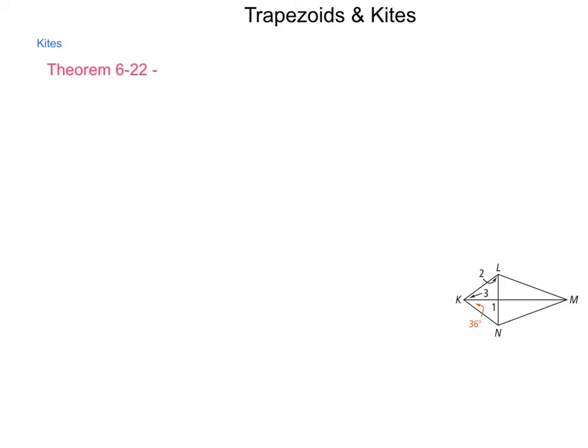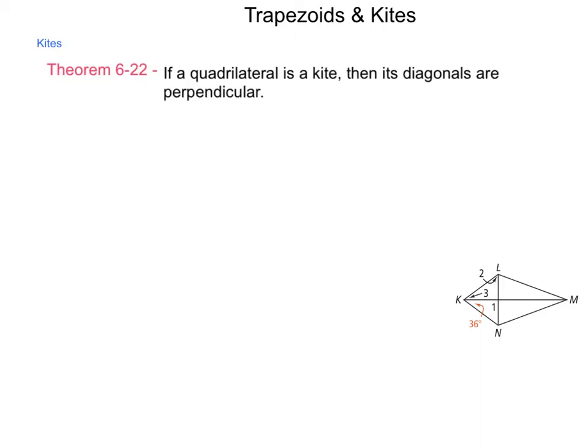Theorem 622 talks about kites, specifically about the diagonals. It states if a quadrilateral is a kite, then its diagonals are perpendicular. Using perpendicular properties, we'll be able to employ trig relationships and other items when dealing with kites. The long diagonal also bisects the short diagonal, but that is not reversible, and we can't always determine the proportionality of dividing the longer diagonal by the short one.